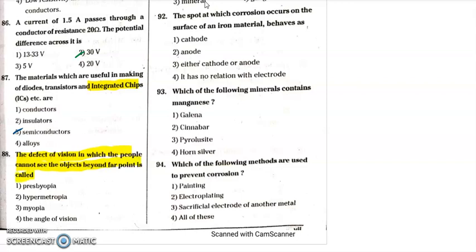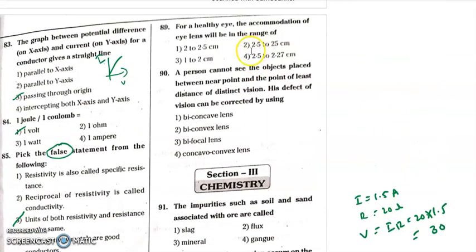Question 88: the defect of vision in which a person cannot see objects beyond a certain point is called myopia. Question 89: the maximum and minimum focal length of the eye lens is 2.5 to 2.27 centimeters. Question 90: a person cannot see the object placed between the near point and the point of least distance — this defect of vision is corrected by using a converging lens.